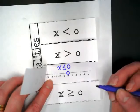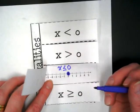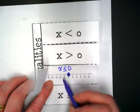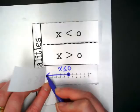but what are we going to do differently this time? We're going to fill the dot in because it's also equal to zero. And we're going to show our arrow again going to the left.